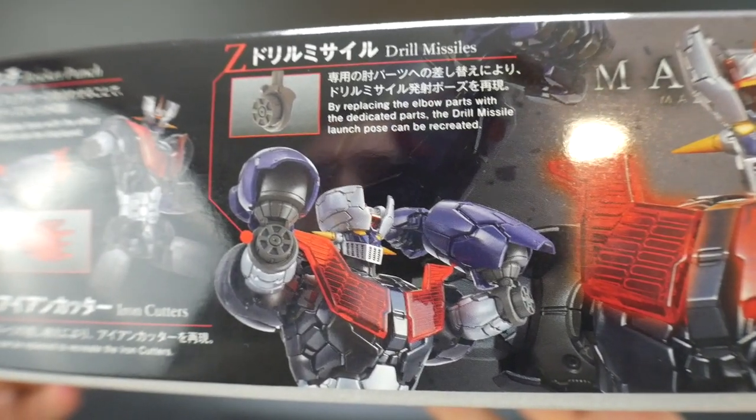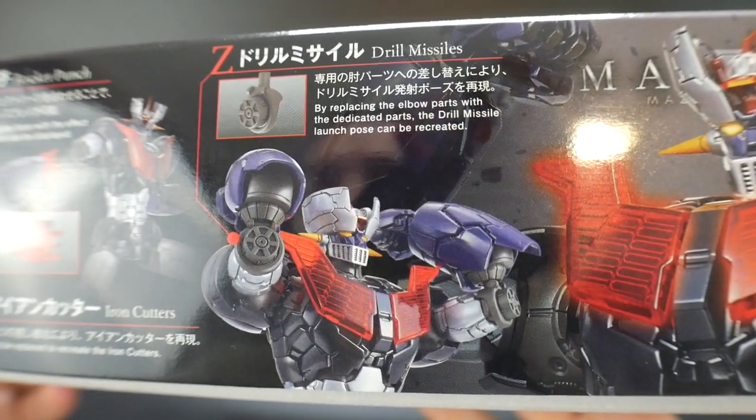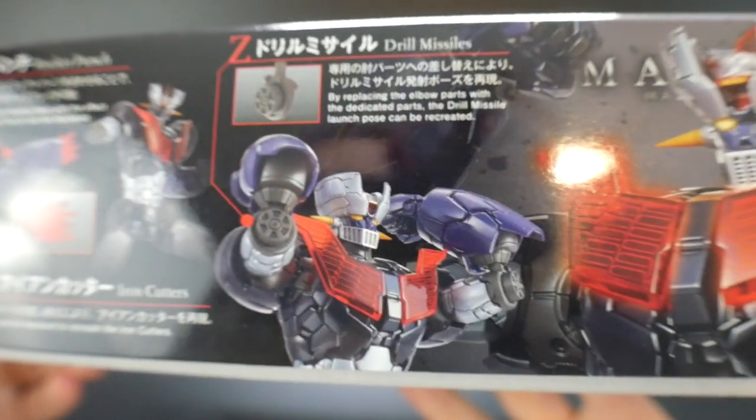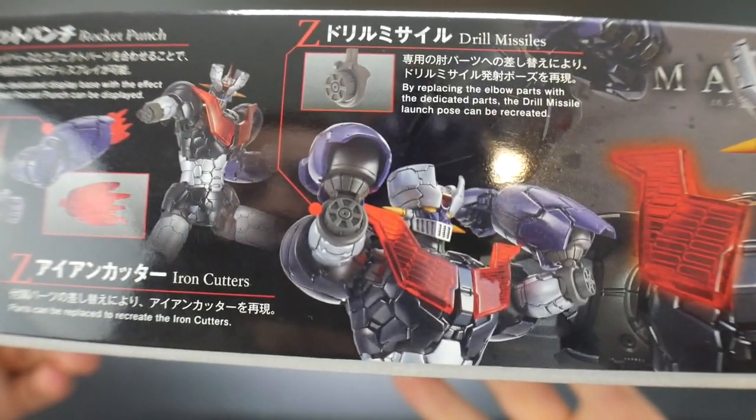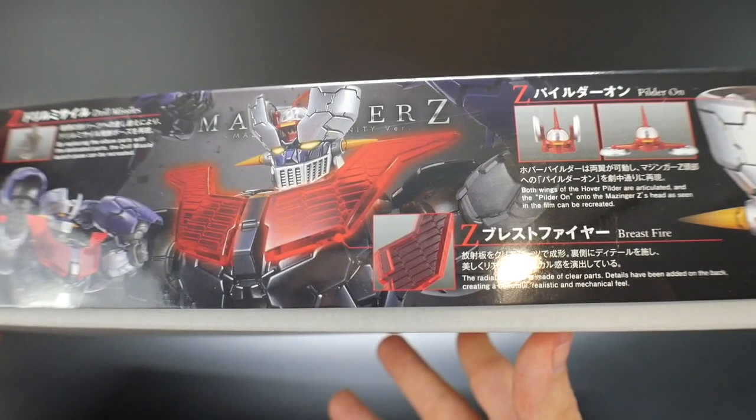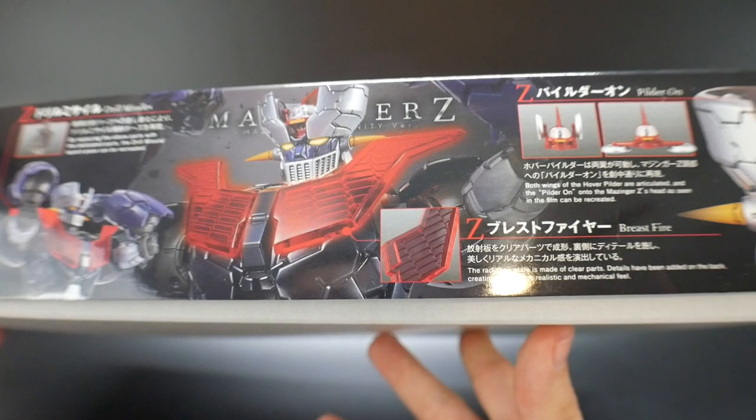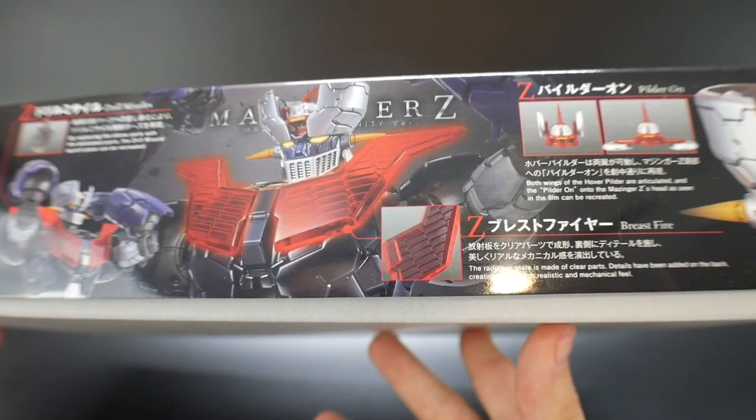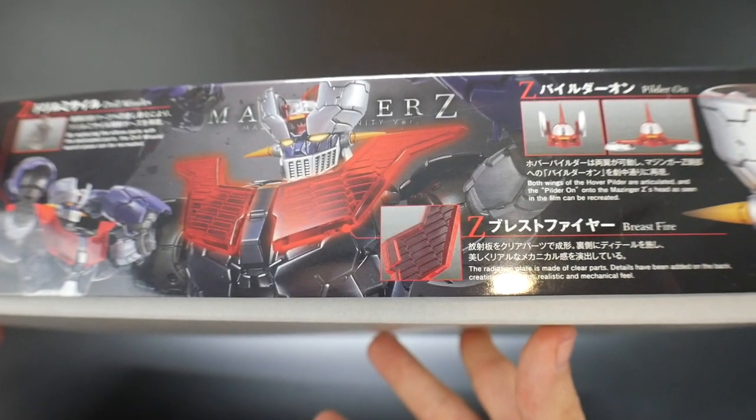Next, you got the infamous Rocket Punch. And it does have a nice little effect part that's going to come with it. So that's probably my go-to pose right there. And then you're going to have the Drill Missiles. So pretty awesome parts that just, you know, the elbows bend back and you see the weapons exposed right there.